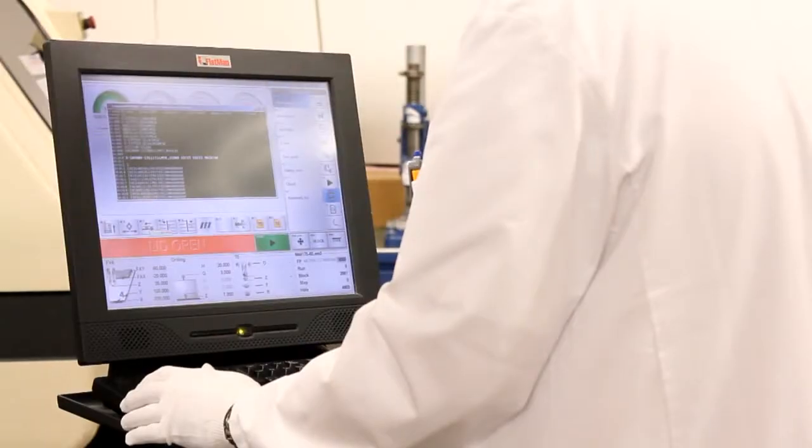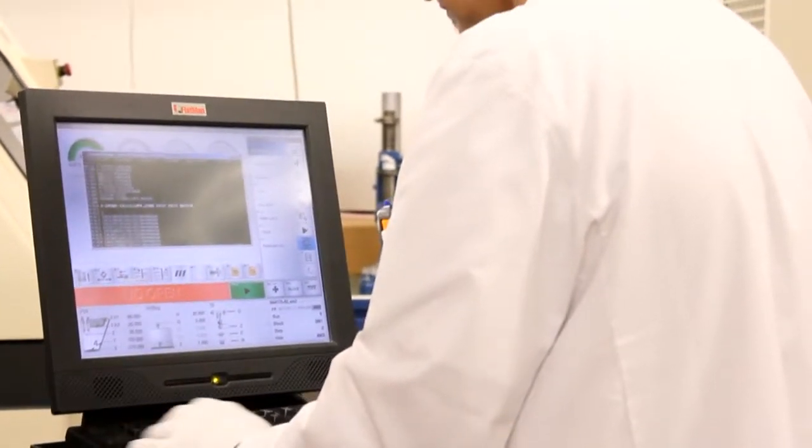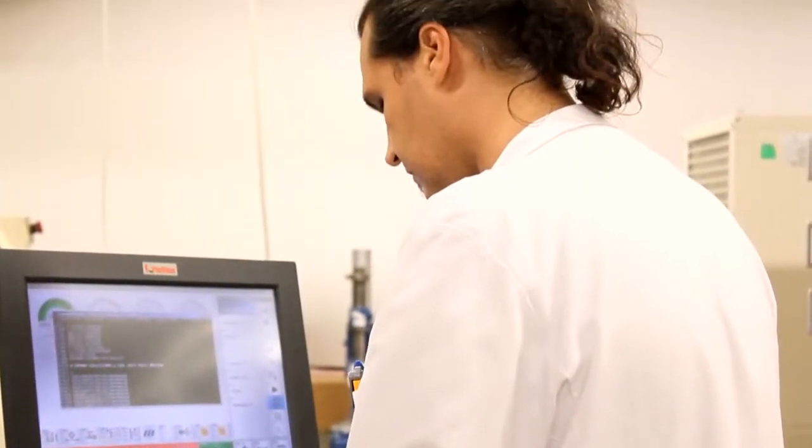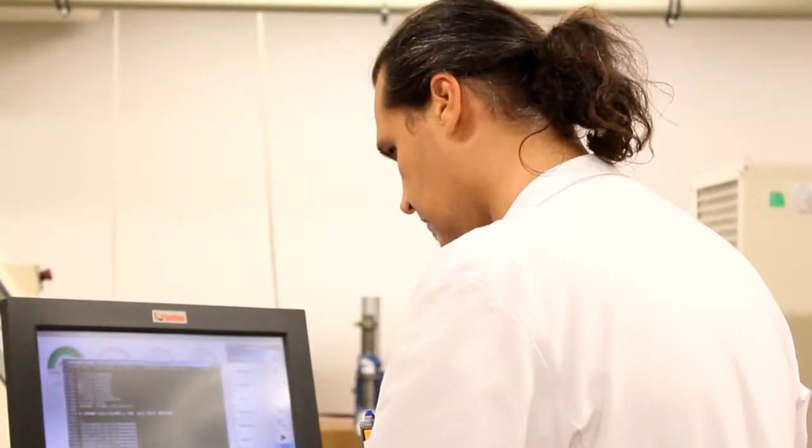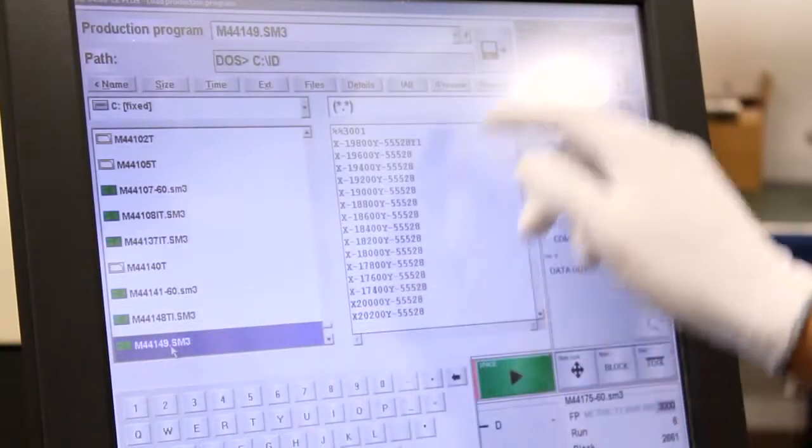The drilling machine is computer controlled. The operator selects the right drill program. This tells the machine which drill to use and the XY coordinates of the holes.